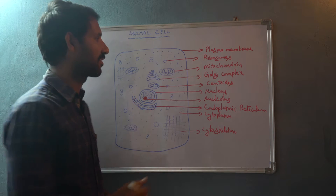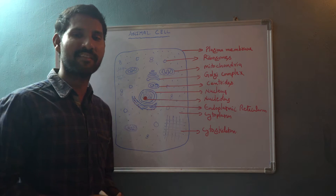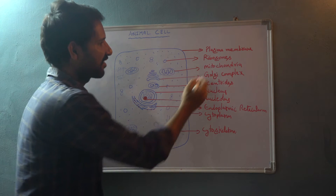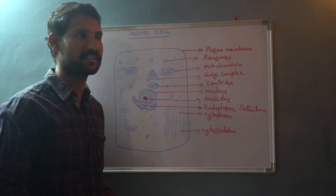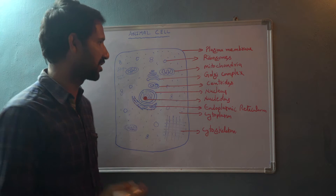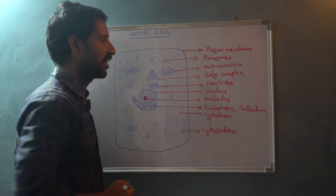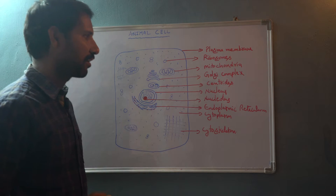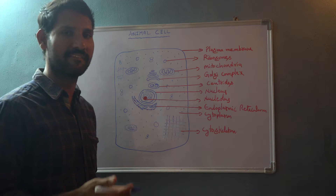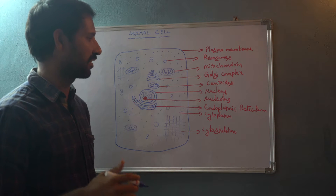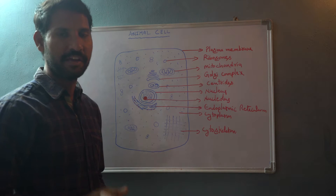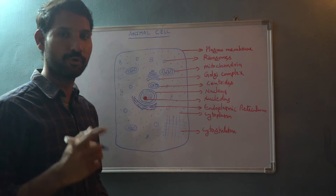Ribosomes are responsible for the synthesis of proteins, whereas mitochondria are responsible for the production of energy. The Golgi complex helps in the packing of various materials within the cell and aids in the process of transportation, along with the endoplasmic reticulum.